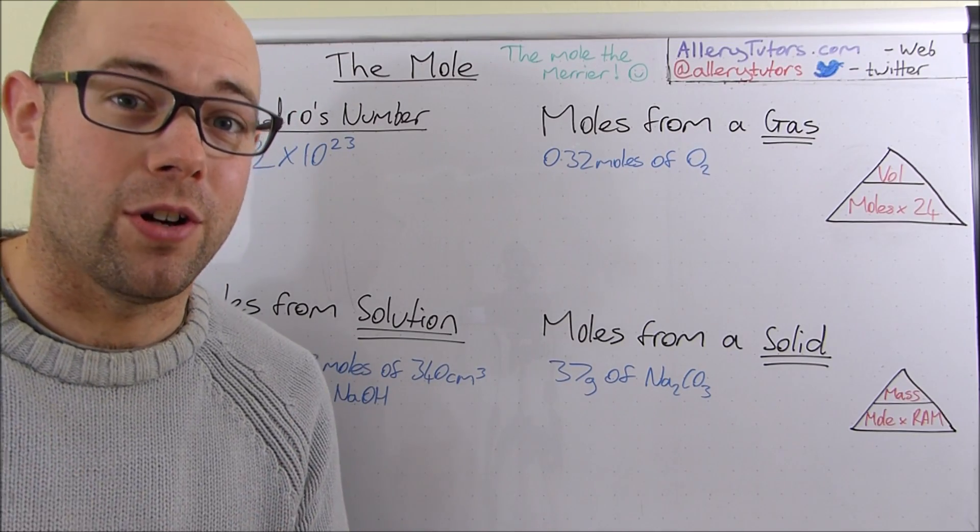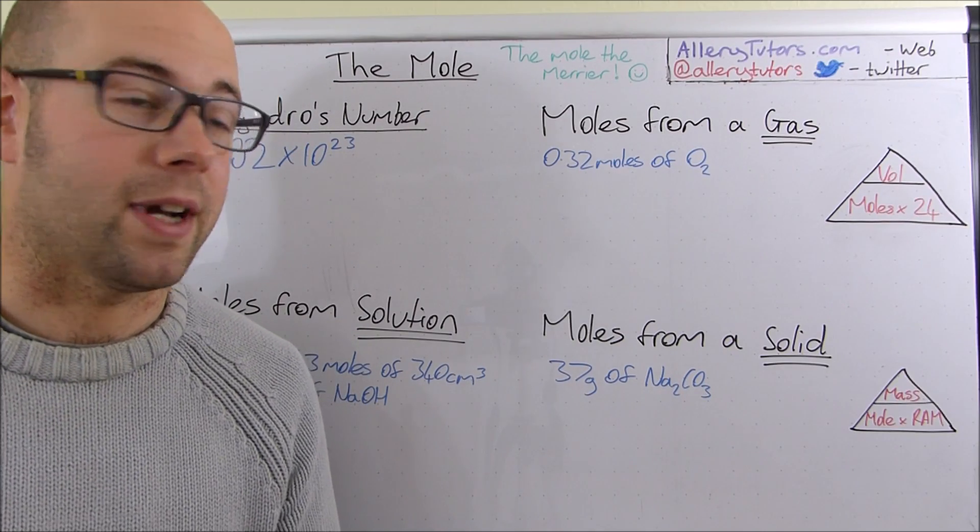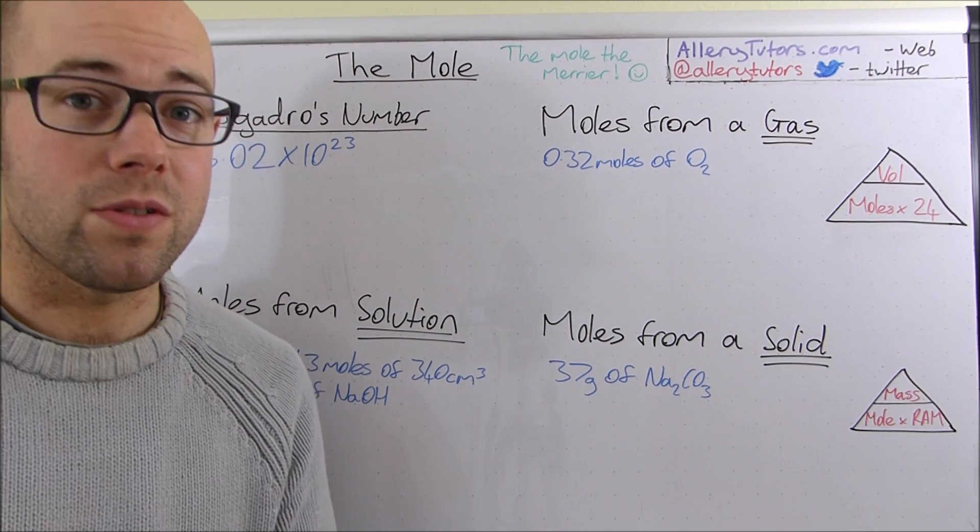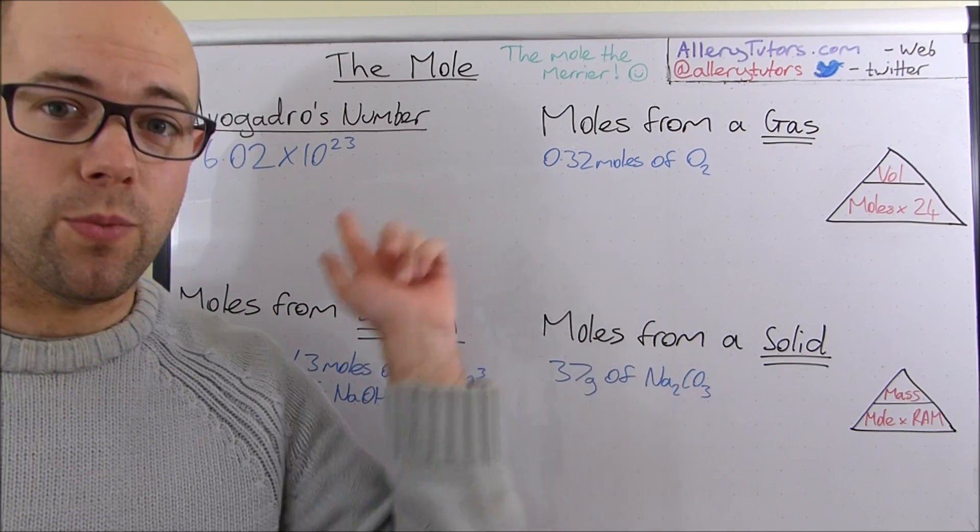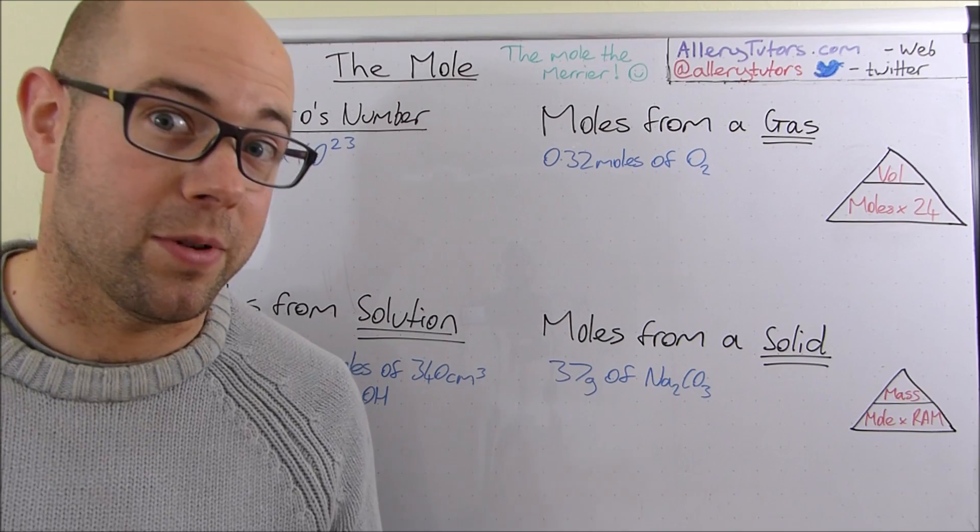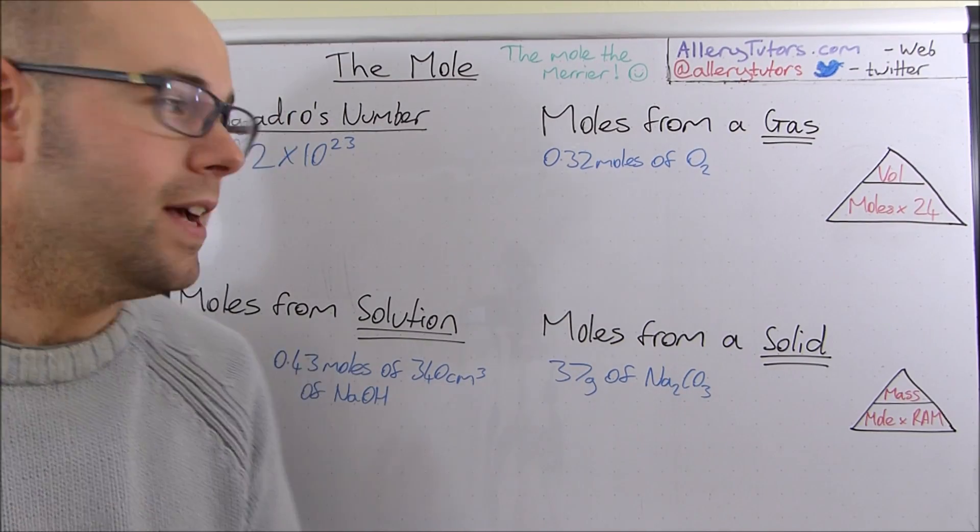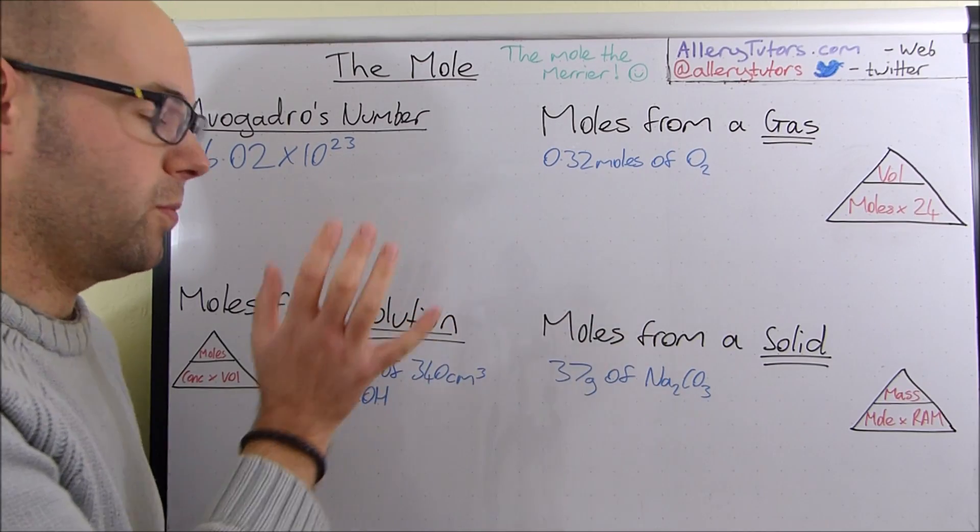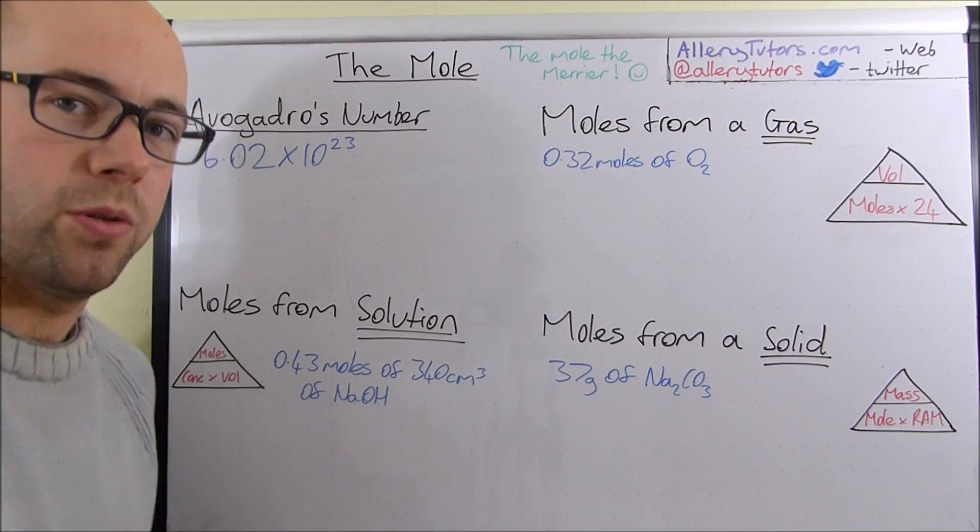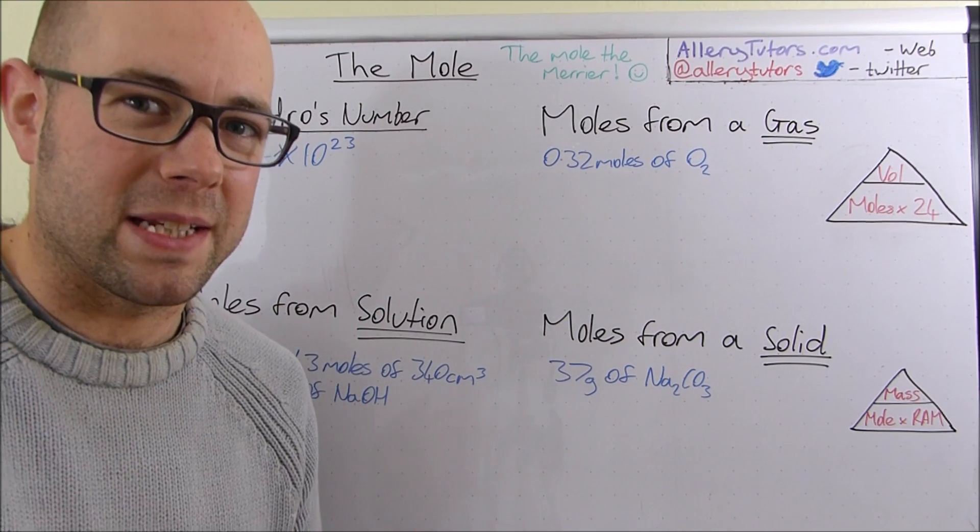So what we're going to do is we're going to look at somebody called Avogadro. So we're going to look at his number, Avogadro's number. We're also going to look at three different ways of calculating the mole. And the mole is the common denominator in all of this, whether you're working out titrations or gases or anything like that. So we're going to work out for a solid, we're going to work out for a solution, and also for a gas as well. Okay, so let's start with the basic stuff first.